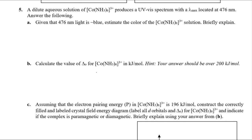The next problem involves a hexamine cobalt(III) complex that produces a spectrum with a λ_max in the blue region. This means it absorbs blue light. Remember: if it absorbs blue, think about ROYGBIV — remove blue from white light, and the compound will appear the complementary color. Removing the blue end makes the transmitted light richer in the opposite color, so it will appear orange.